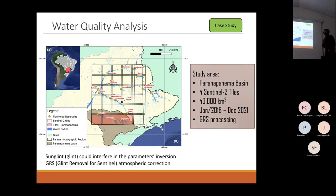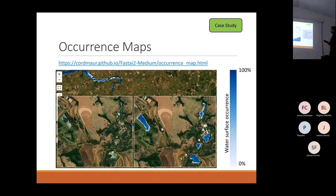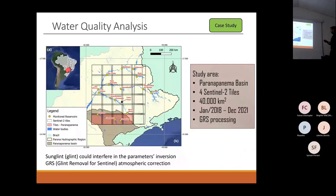Now we enter the water quality analysis. For this, we use the Paranapanema Basin — not the whole area, just the four tiles in the bottom portion, making up 40,000 square kilometers, over the same period.